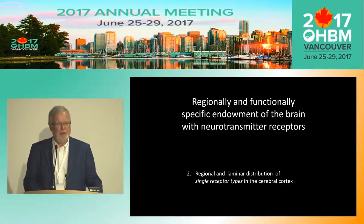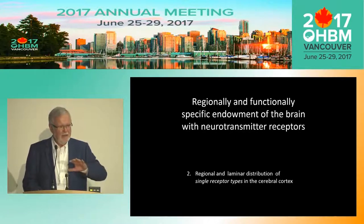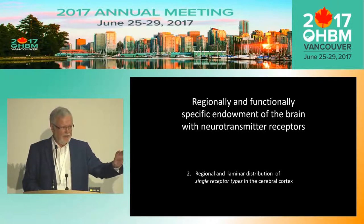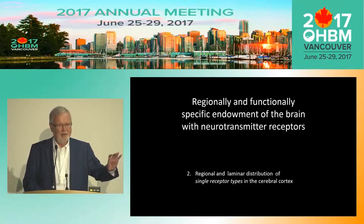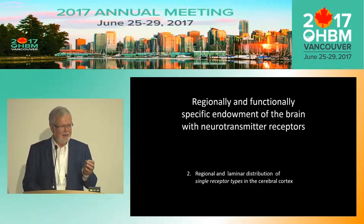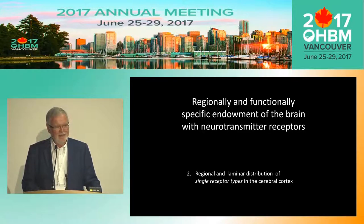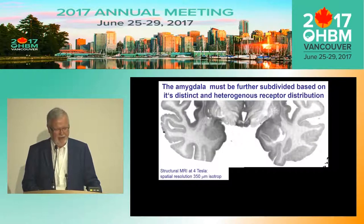I will now stop the methodical introduction and come to the question: are the receptors equally distributed over the cortex — regional homogeneity — or equally distributed throughout a single cortical area — laminar homogeneity? I can say that both cases are not found in reality. We have considerable inter-regional and inter-laminar inhomogeneity. The first example is the amygdala.